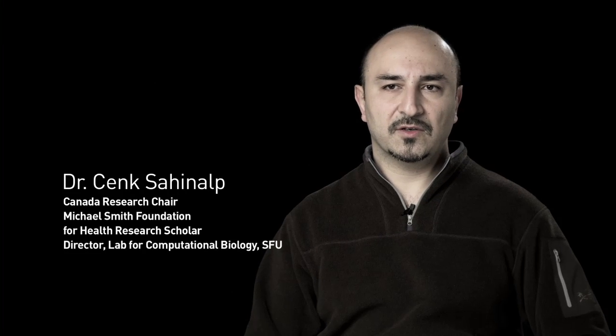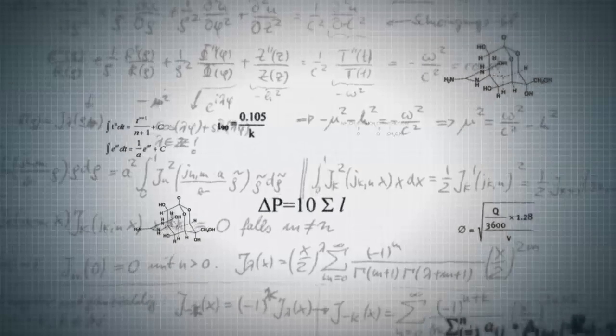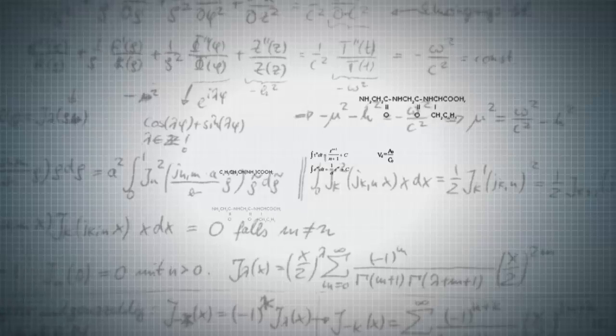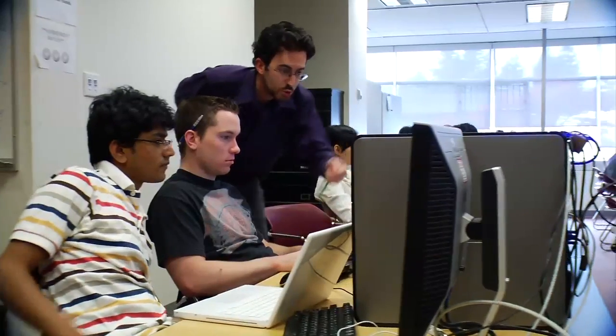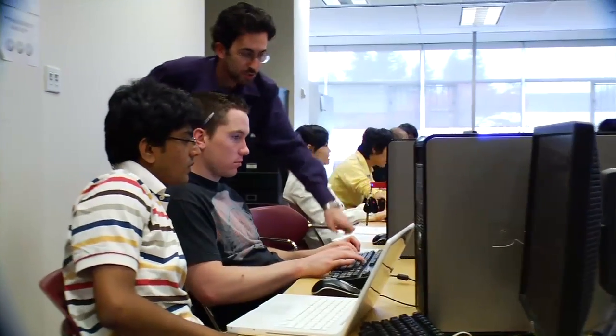The 1000 Genome Project is an international consortium of more than 70 groups in the world, aiming to sequence now more than 2,000 individuals, trying to figure out the exact order of about 3 billion base pairs, 3 billion characters that make up their genomes.